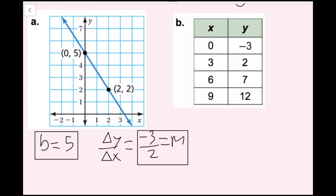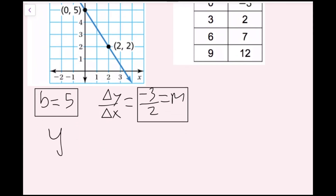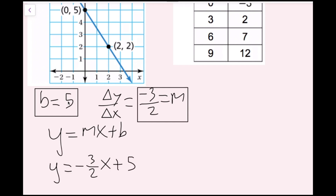Now all I need to do is plug this in to my equation. I'm going to rewrite y equals mx plus b. I have my slope m, which is negative three over two. So I'm going to rewrite this as y equals negative three over two x. And then our y-intercept is positive five, so I'm going to write plus five. And now we're done with part a.